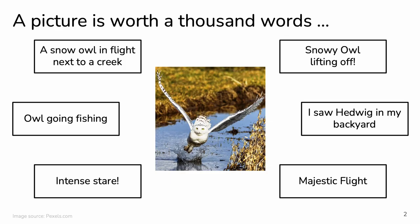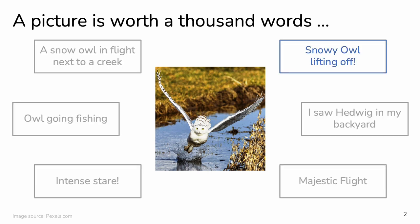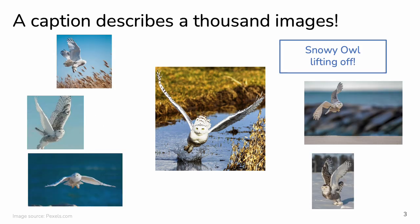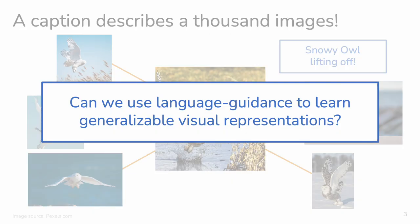People often say that a picture is worth a thousand words, but if you consider a single caption, you'll find that it describes a thousand images. While those images share the same concept, they each depict a different variation of it. In this work, we ask: can we use language guidance to learn generalizable visual representations?